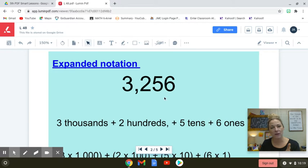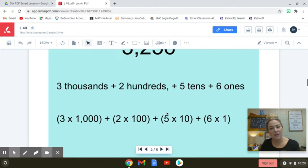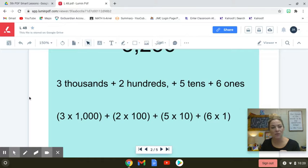So this number right here, we have 3,256. We have 3,000s right here, plus 200s, 2 is in the hundreds place, plus 5 tens, 5 is in the tens place, plus 6 ones. 6 is in the ones place. This is the same thing as this. Now instead of writing words, this here is expanded notation.